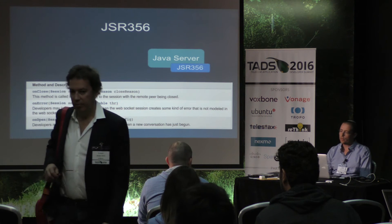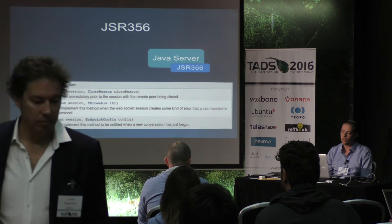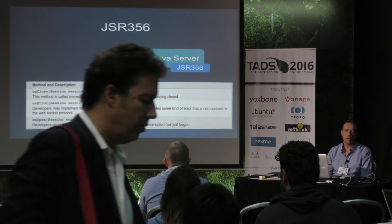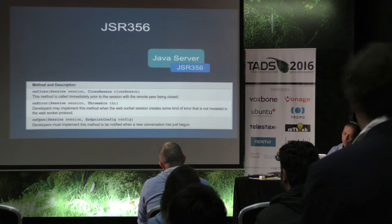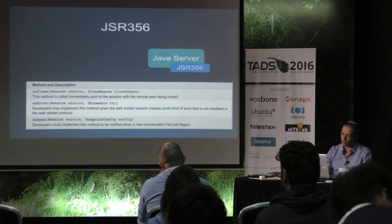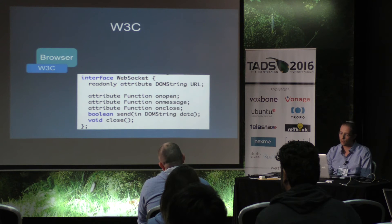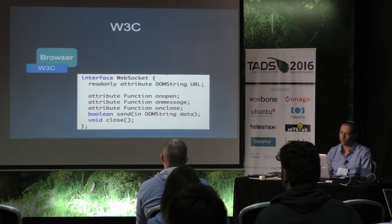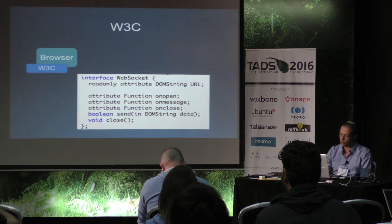The JSR main API methods are onOpen, onClose, and onError — these are the main standard methods. And if you look at the browser side, the W3C has similar methods: onOpen, onMessage, and onClose.